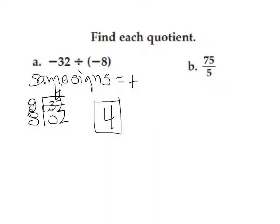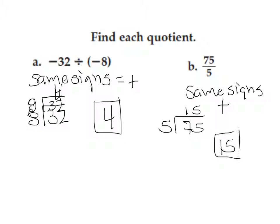Problem B, I see the signs are the same. Same signs mean positive. So, I'm going to go ahead and set up a division problem. 75 divided by 5 is 15. Positive 15 is my answer.